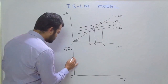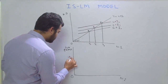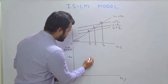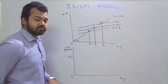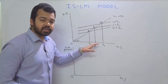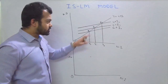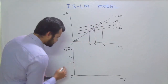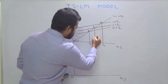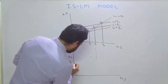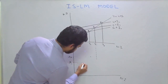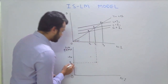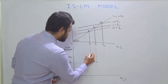At equilibrium E0, the rate of interest was R0. We plot this point on the graph. As rate of interest is reduced to R1 — to increase investment — we plot a second point. We can draw a line connecting these two points.